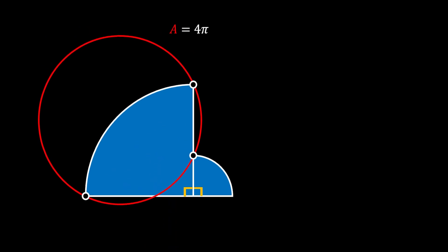We will start by marking the points of intersection between the circle and our quarter circle as A, B, and C. We can also mark the bottom point of intersection between those two as D. Now we will mark the center of these two circular segments as O.